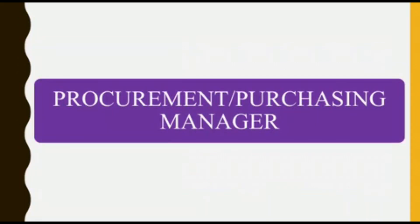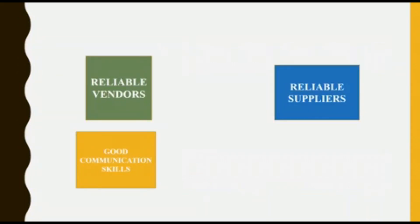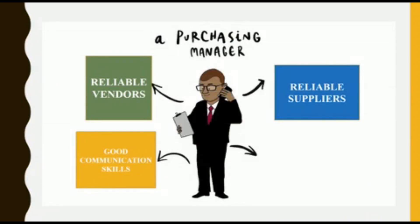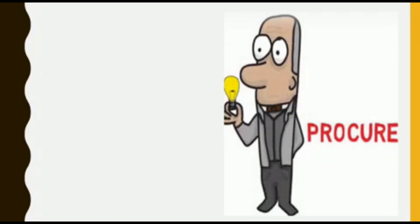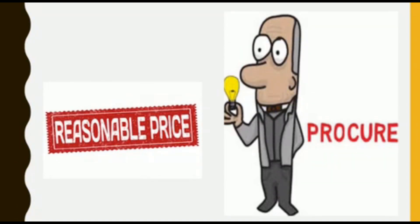Procurement or Purchase: This is actually not so common field for food technologists. However, I have seen some food technologists working in this scope and they are doing great. A person responsible for purchasing or procurement will seek reliable vendors or suppliers to provide quality goods at a reasonable price, negotiating prices and contracts, reviewing technical specifications for raw materials, components, equipment or buildings.